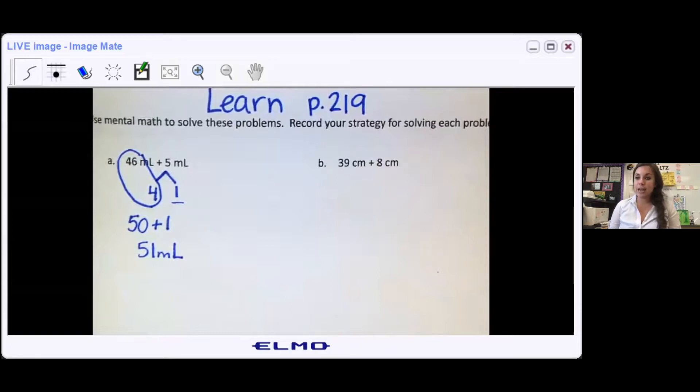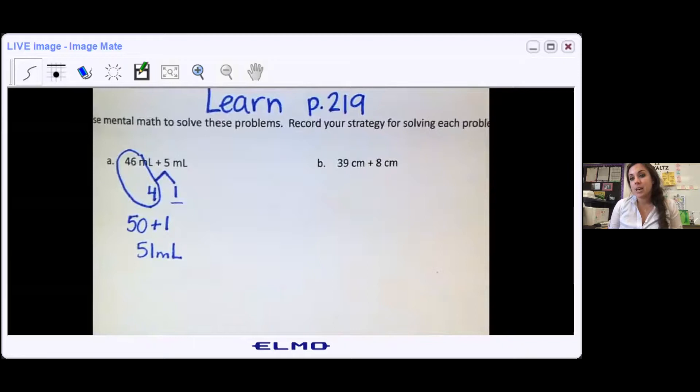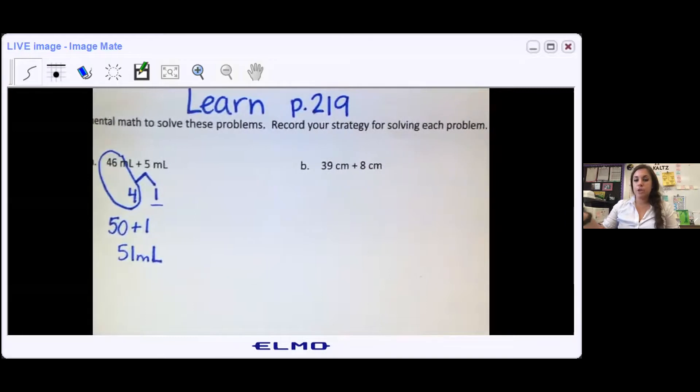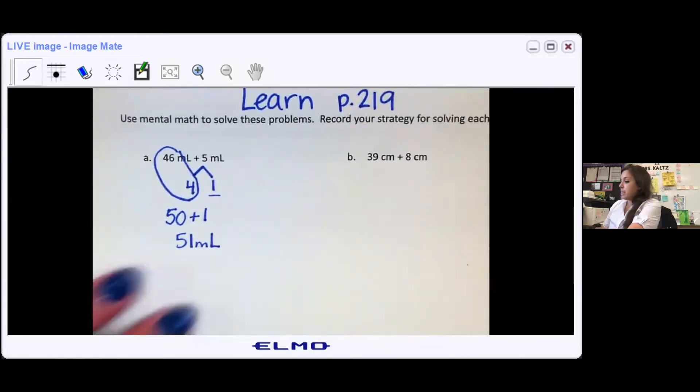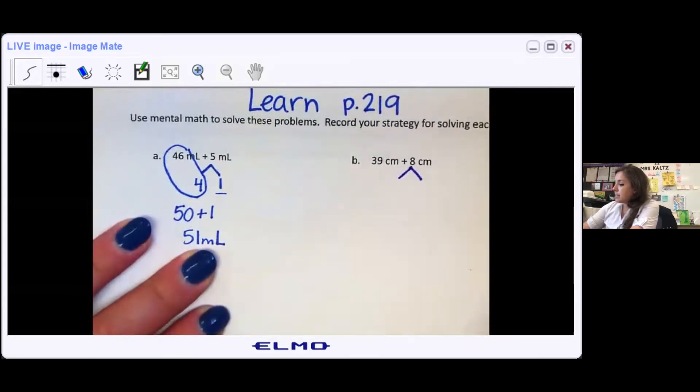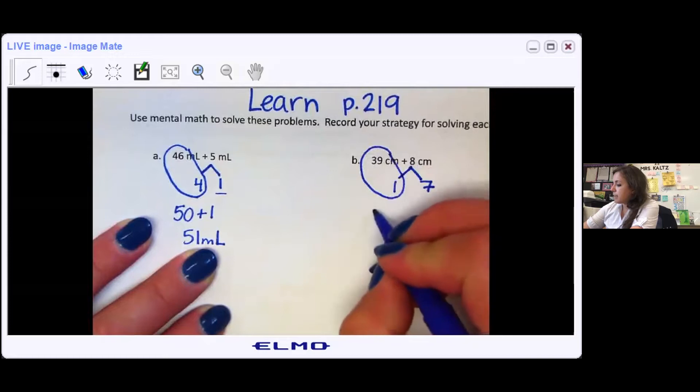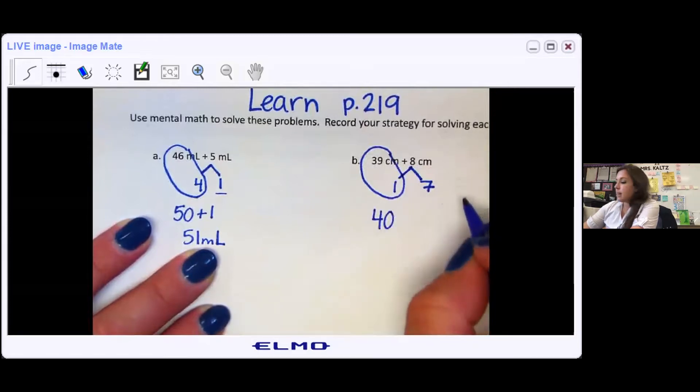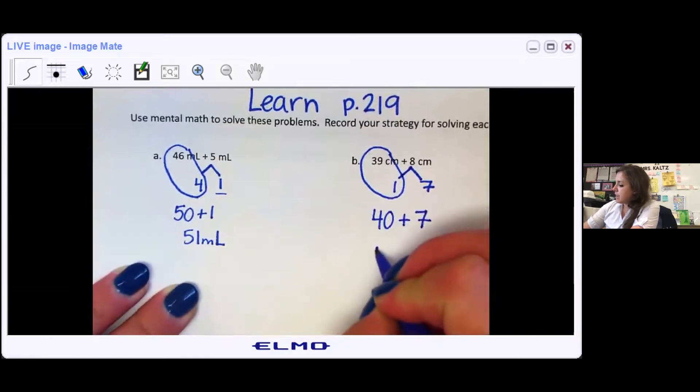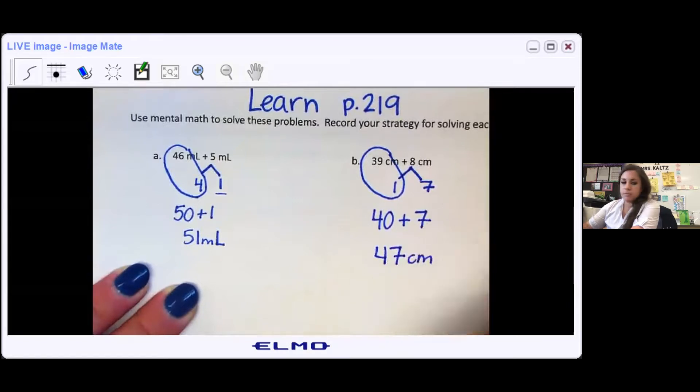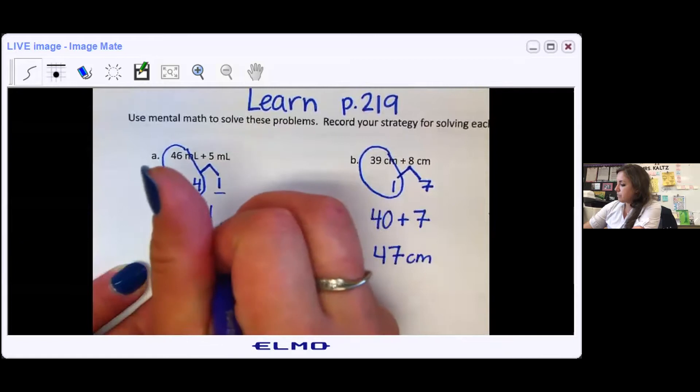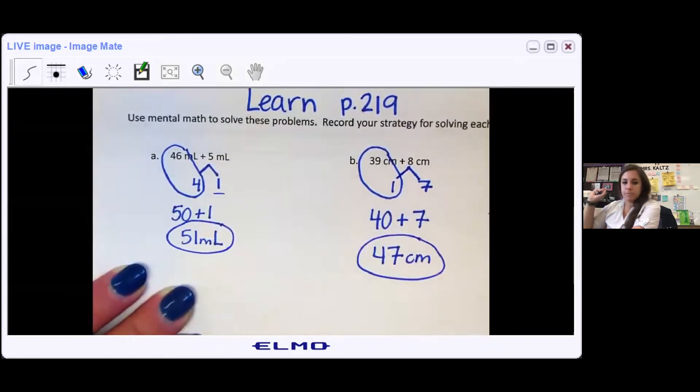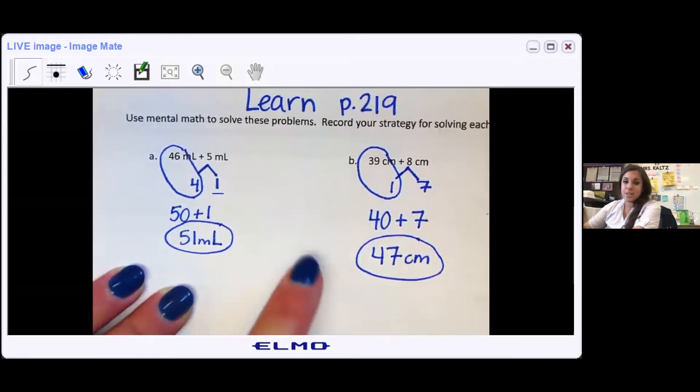Okay, hopefully you paused it and tried all of them on your own. Now remember, I might have done my math differently from you. And that's okay as long as we come to the same answer. So part B, your answer should be 47. Here's how I got it. I split up 8 into 1 and 7 so that I can loop 39 with the 1 and make my friendly number of 40. Then I'm going to add this leftover 7 to get my answer of 47 centimeters. Don't forget that unit of measure. I'm going to circle my final answers. Again, you might have done it differently, which is fine as long as you got 47.